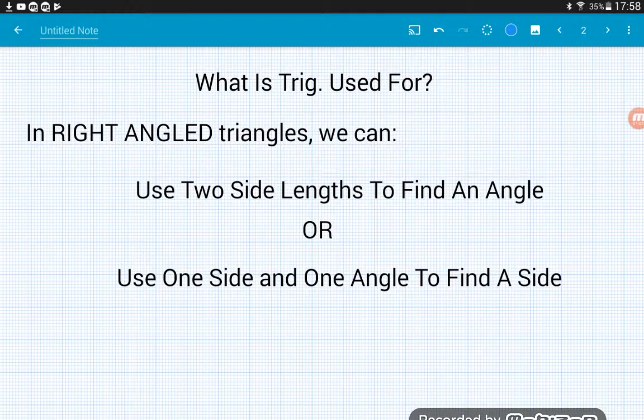It's quite closely linked to Pythagoras. In Pythagoras, if you know two side lengths of a right angled triangle, you can use those to find the third, whereas trigonometry uses or finds angles as well as lengths. So it's a little bit more powerful.